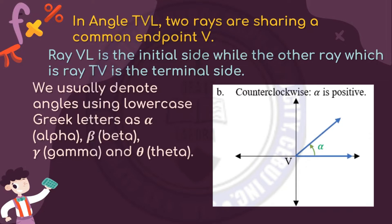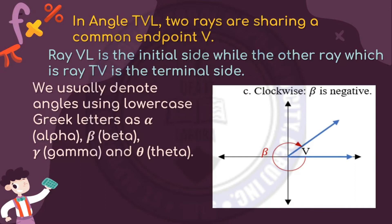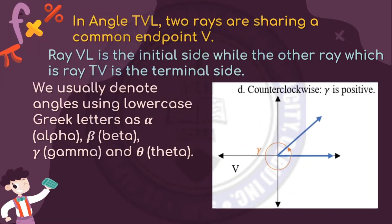Angles in counterclockwise direction — where angle A is positive — start with the initial side pointing to the terminal side. Angles in clockwise direction are negative, as in angle beta. And for angle gamma, the angle is positive since it turns counterclockwise.